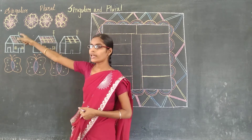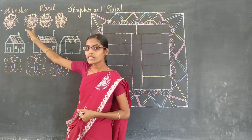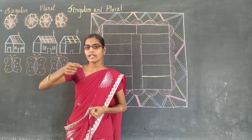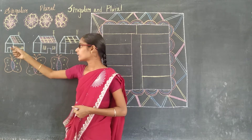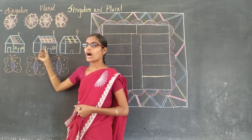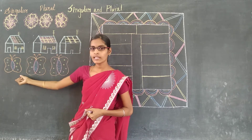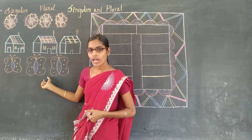Here, flower — flowers. This 's' sound is added. Here, house — houses. Butterfly — butterflies.